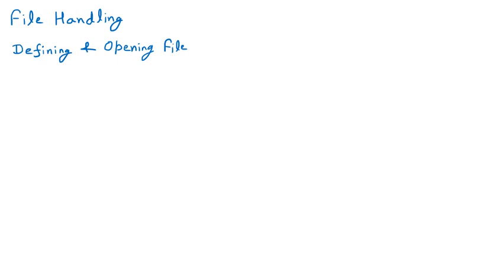First I am giving you the syntax of the file, and afterward we will learn what things are required one by one. There is a FILE — this FILE is the data type or data structure provided to us. It is a data type already available, which we are going to use in file handling. Data type is part of the data structure — just as we have integer, float, and character as data types, similarly FILE is a data type available in the input-output library of C programming.